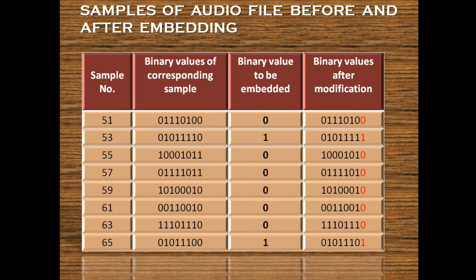The next column shows the binary values of the corresponding samples. The third column is the secret text — that is, the binary value to be embedded. It is the binary value of decimal number 65, which is the alphabet 'A' in ASCII. So here we are hiding the alphabet A. The last column shows the binary values after modification, where the LSB is replaced with the binary value of our secret text.